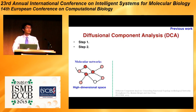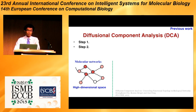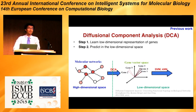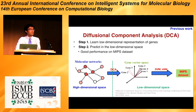There is a recent work called Diffusion Component Analysis, published in Recomb 2015, which effectively models noisy and large molecular networks. DCA first learns a low-dimensional representation for each gene in the network, and then does prediction in this low-dimensional space by taking the low-dimensional representation as features and using classifiers such as support vector machine or k-nearest neighbor. DCA achieves very good performance on the MIPS dataset compared to other dimensionality reduction methods such as principal component analysis or non-negative matrix factorization.